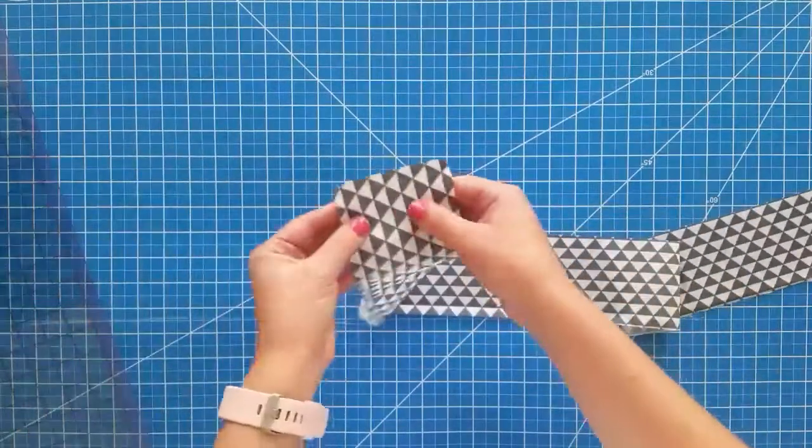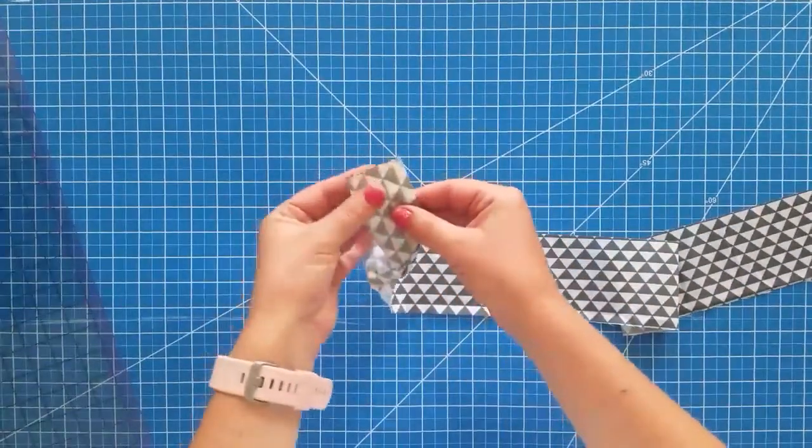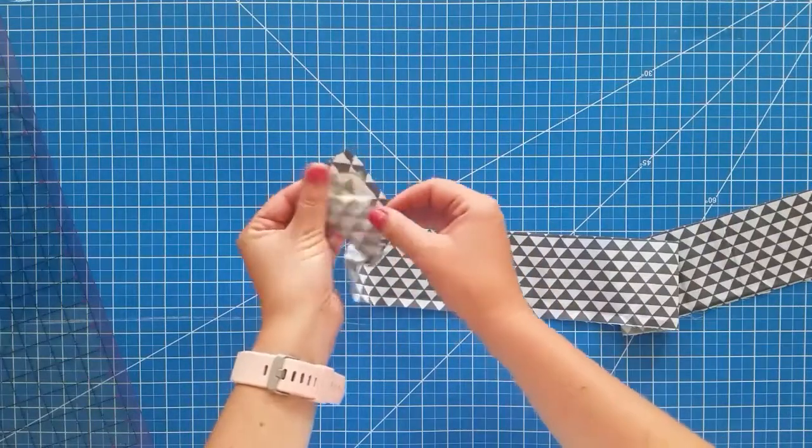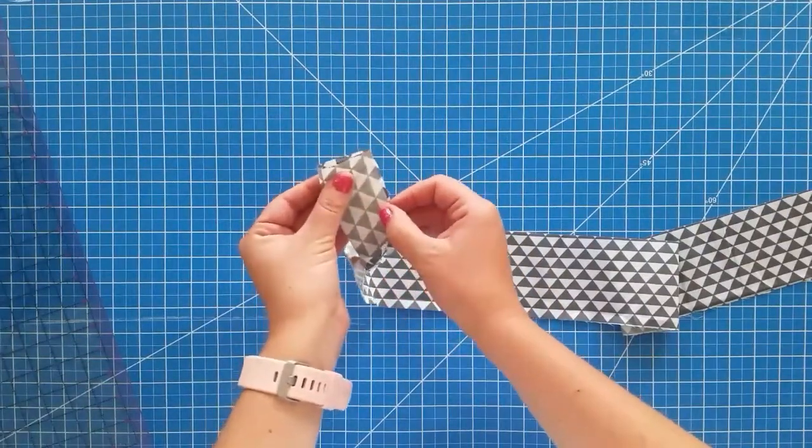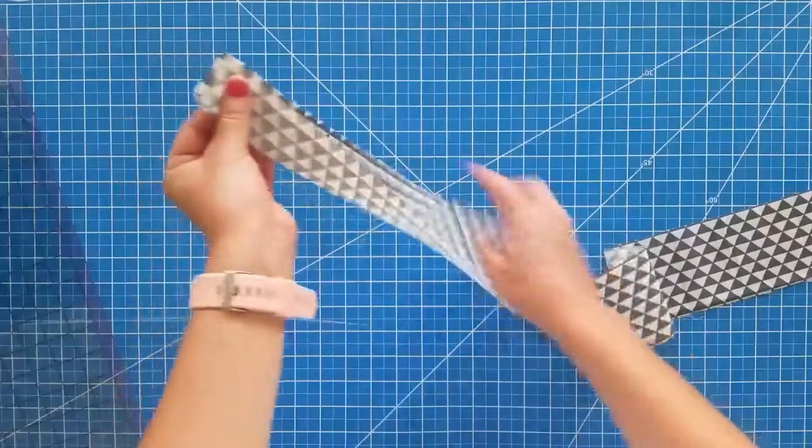So what you're going to want to do is just fold it so the right sides are together, just like that, and then you're just going to sew down the side. You're going to sew it all the way down.